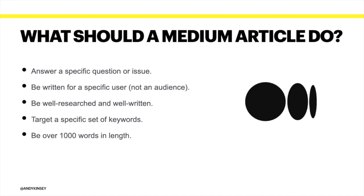These are the few things you need to do, and they apply across all articles you write on any site. First, you need to answer a specific question or issue. It needs to be written for a specific user, not a general audience. You need to write for a specific persona — for example, if I'm writing for a business owner, I write for a single business owner, not a set of business owners. If I'm writing an article about the NFL, I write for a specific person sat on a sofa and answer the exact question they are asking.